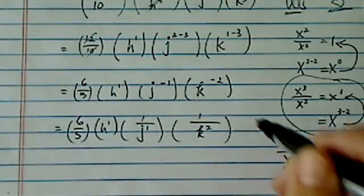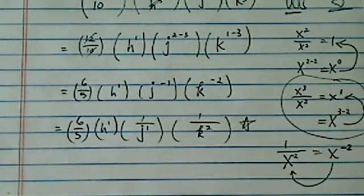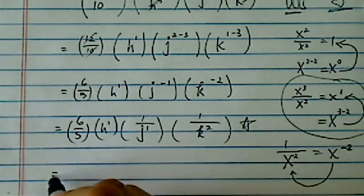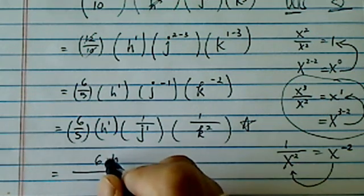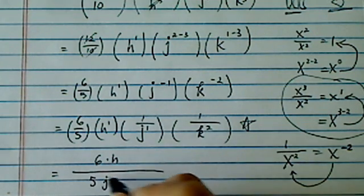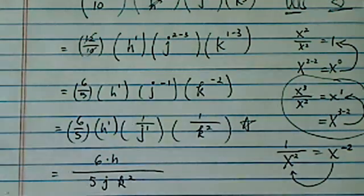Now a lot of teachers require you to put everything in positive exponents. So let's put everything together. I have six on top, H on top, five, J, K squared. That's it.